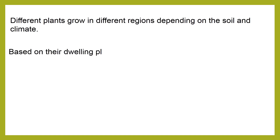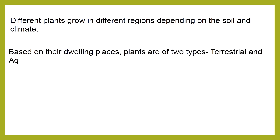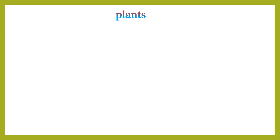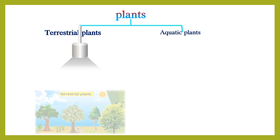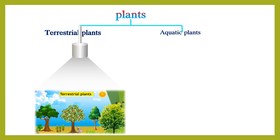Based on the growing places, plants are two types. One is terrestrial and the second one is aquatic. So, plants are two types: one is terrestrial plants, and another one is aquatic plants.